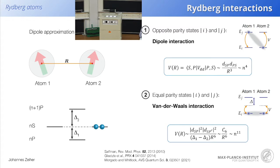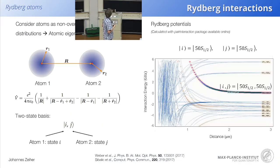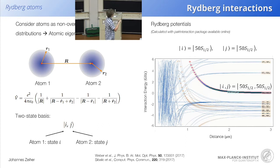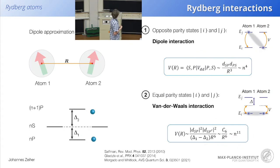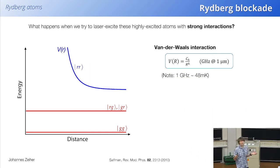There should be a 1/r⁶ potential — this is exactly the second-order perturbation theory potential emerging from coupling two opposite-parity dipole interaction channels. This is the 1/r⁶ because you start from equal parity states that have no direct dipole interaction.